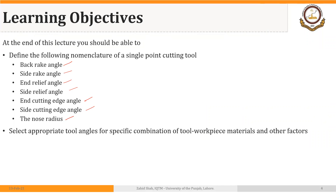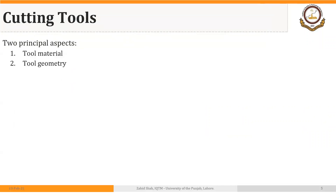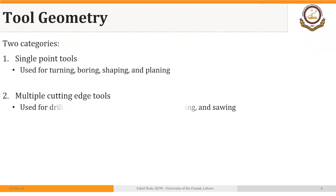You should be able to select appropriate tool angles for specific combinations of tool-workpiece materials and other factors. As we discussed in the last lecture, there are two principal aspects of a cutting tool: tool material and tool geometry. Last lecture we discussed tool material; today we are going to start our discussion on tool geometry. When we talk about tool geometry, we have to specify whether we are talking about a single point cutting tool or a multiple point cutting tool.